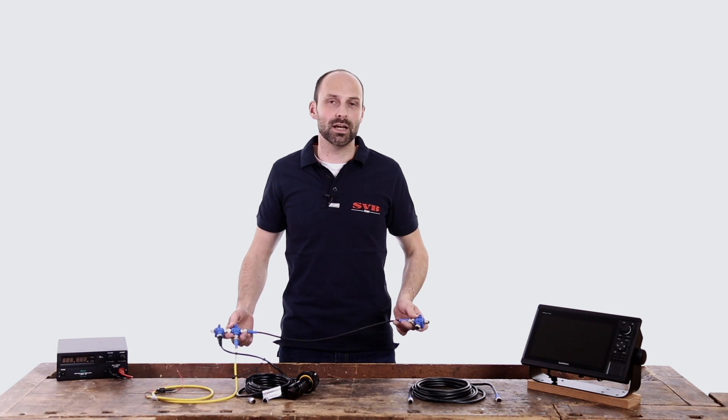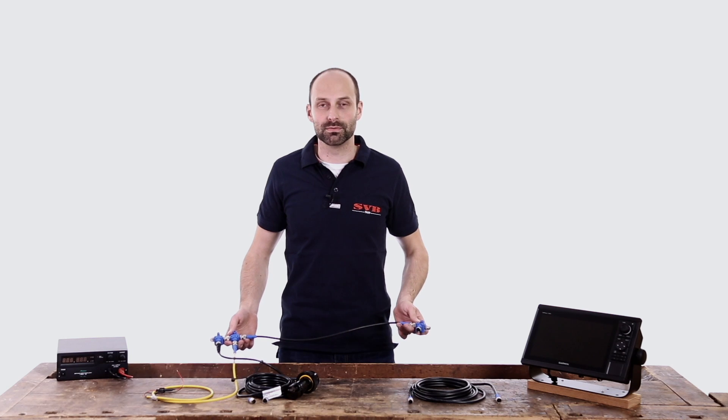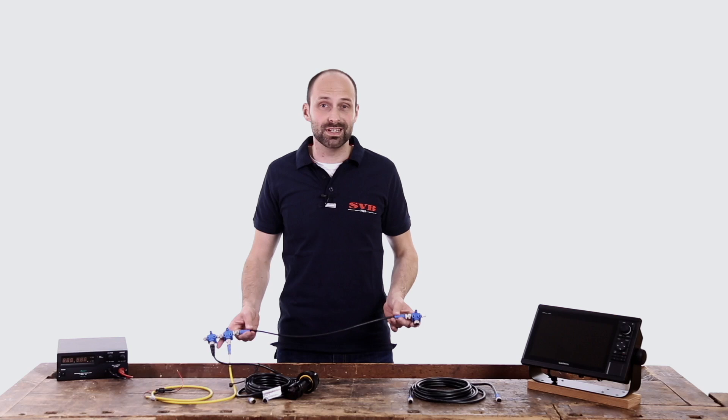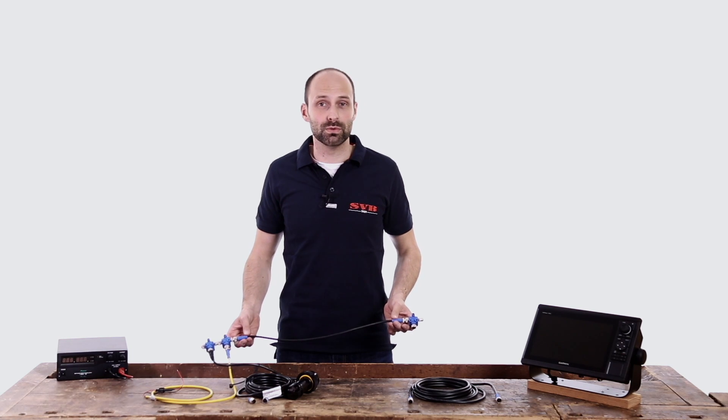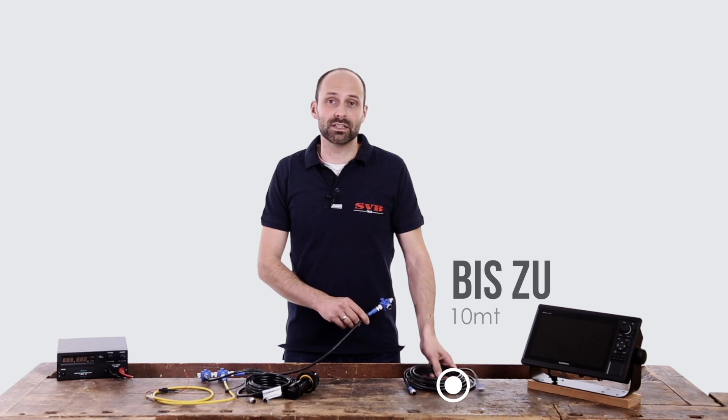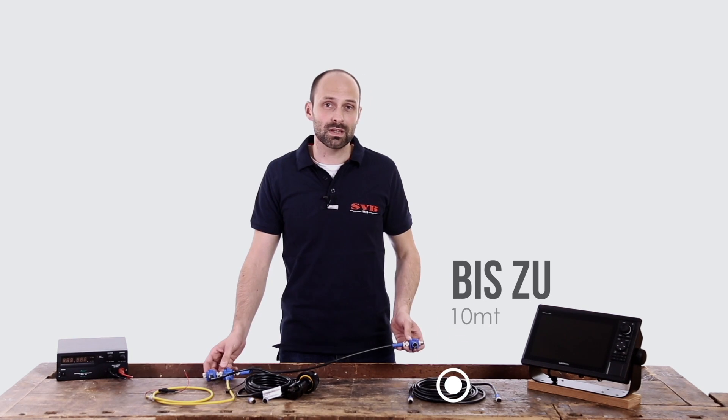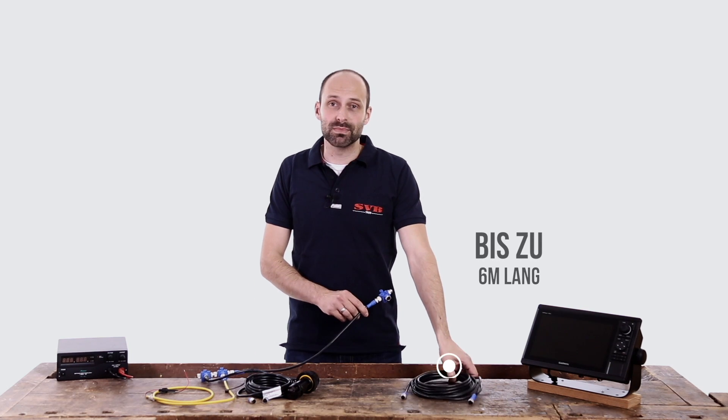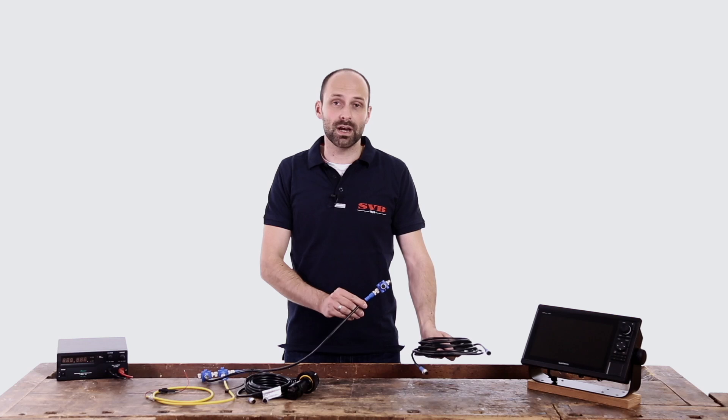The next step is to connect our chart plotter to our NMEA2000 backbone. If the cable length of the backbone is not long enough to reach the chart plotter, its length can be increased with an extension cable of up to 10 meters long. The chart plotter is connected to a 3T piece in our network with a maximum 6 meter long network cable.